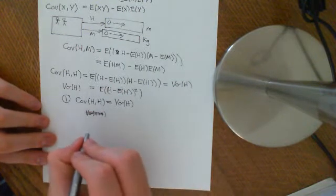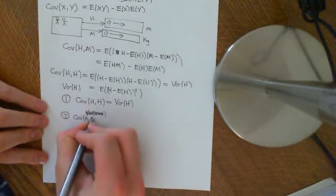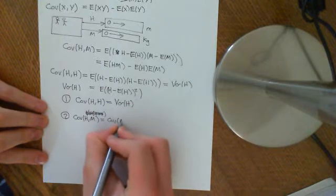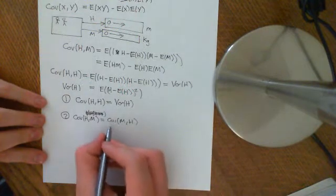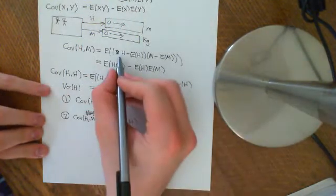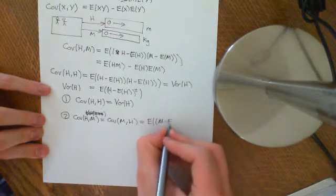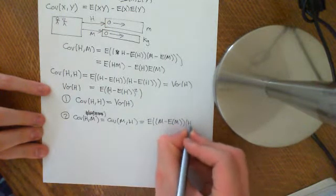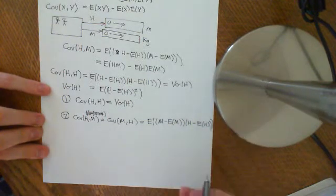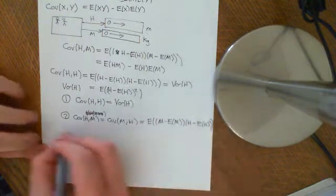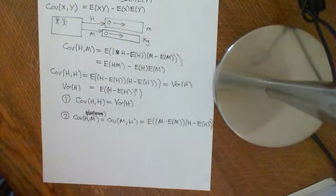Our second equation: the covariance of H with M is equal to the covariance of M with H. It makes no difference whether you ask for Cov(H,M) or Cov(M,H). This is immediately clear because taking Cov(M,H) gives the expected value of M minus the expected value of M, times H minus the expected value of H — which is exactly the same thing by commutativity of real numbers.